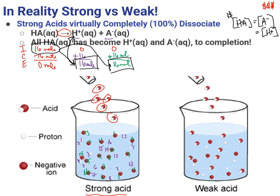Now for a weak acid, if we think about the ice table again, it's the same dissociation reaction. For the weak acid, I would have also put in 16 moles of weak acid. HA aqueous undergoes dissociation, becoming H+ and A-. We had 0 of each initially. But now at equilibrium, I only gained 6 moles of H+. My X value for the weak acid was only 6 moles.